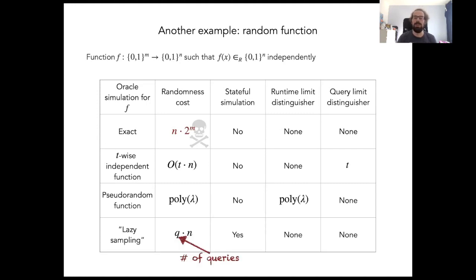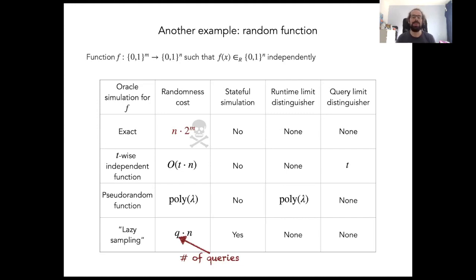Finally, there is a way of simulating such a random function against arbitrary adversaries efficiently, and this is called lazy sampling. The only thing we have to give up is statefulness — now we have a stateful simulator that just samples each output as requested and keeps a list of outputs it has returned before. It's an almost trivial algorithm, but it exactly simulates a random function efficiently, using a linear amount of randomness in the output length and in the number of queries.